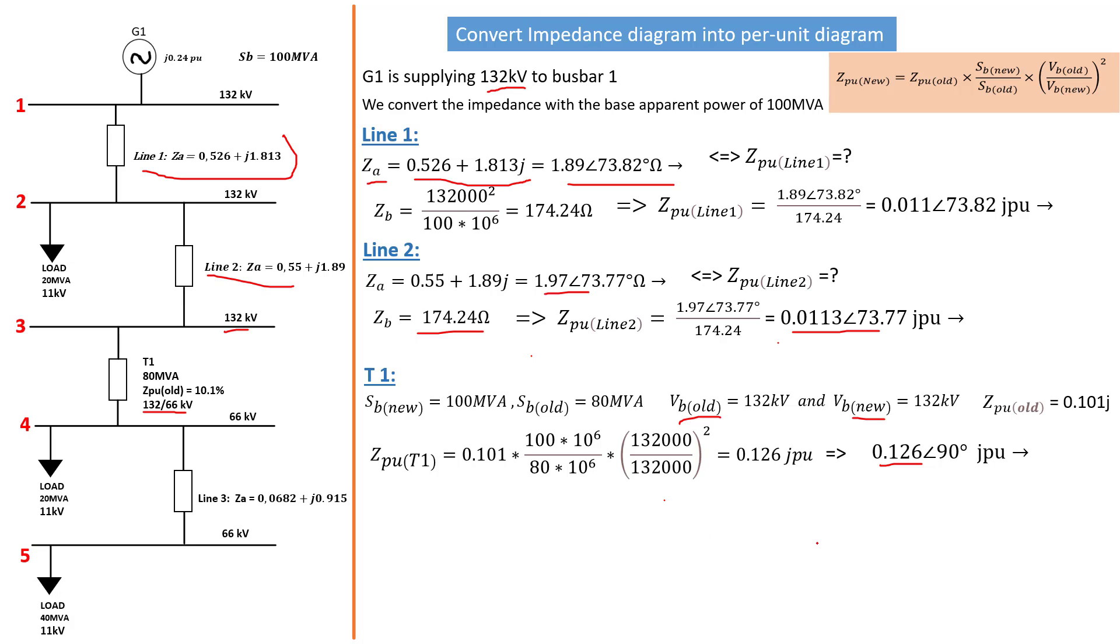The next step is to find the Z per unit for line 3. Now we know that bus bar 4, which is the potential supplying line 3, has now changed. Line 3 is being supplied from bus bar 4 and bus bar 4 now has a potential of 66 KV because the transformer converted from 132 to 66 KV. We have to bear that in mind when we calculate this line 3 Z per unit.